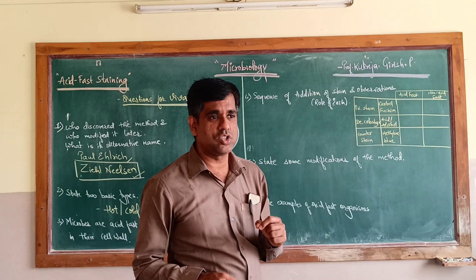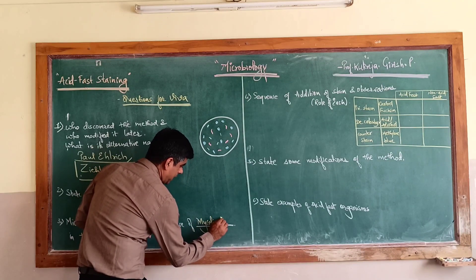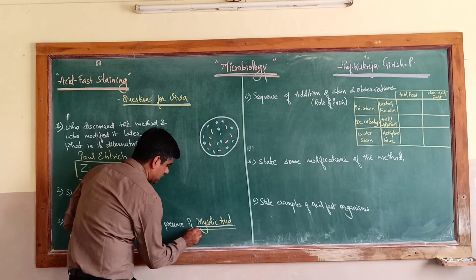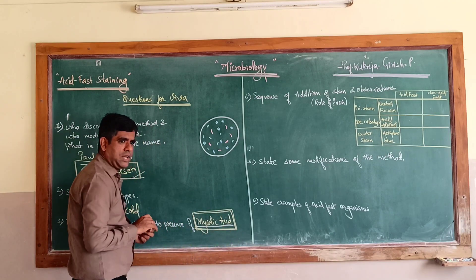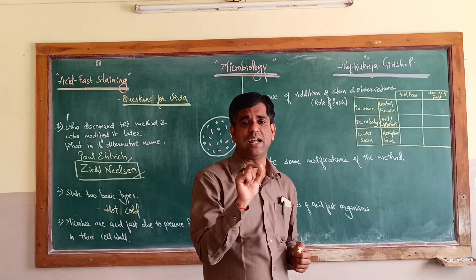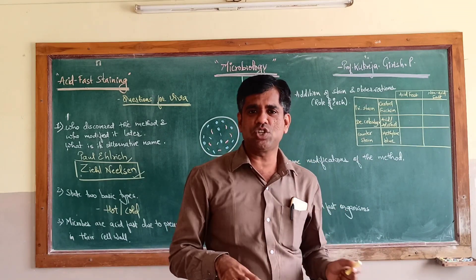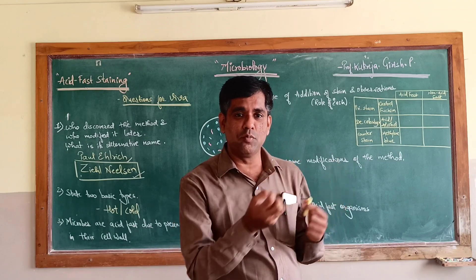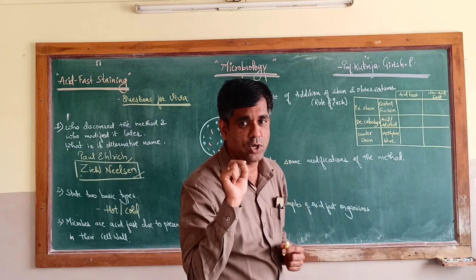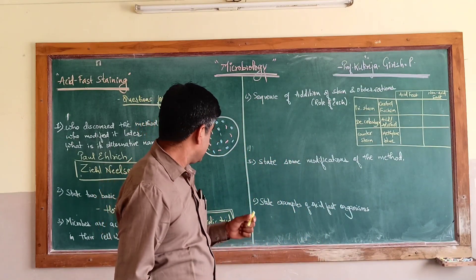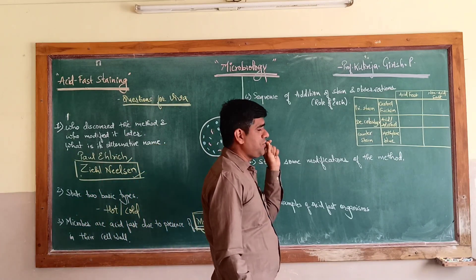Microbes which are acid fast - why are they acid fast? They are acid fast due to the presence of mycolic acid. They have a component called mycolic acid, a waxy substance in their cell envelope, and therefore they are acid fast. Once stained, they are not decolorized even with a strong acid like H2SO4, or a mixture of acid and alcohol, because of this waxy mycolic acid component in their cell envelope.